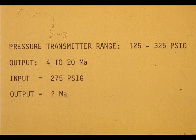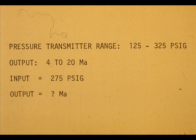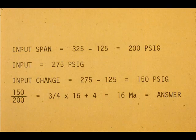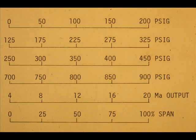Now take the same conditions and calculate the output for 275 PSIG input. 275 PSIG input is 75% of the input span, so the output is 16 milliamps. We have proved that the transmitter is concerned with percent span and not range.